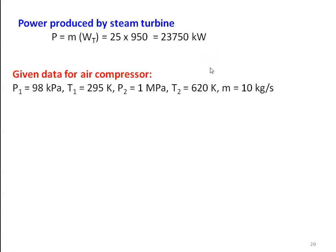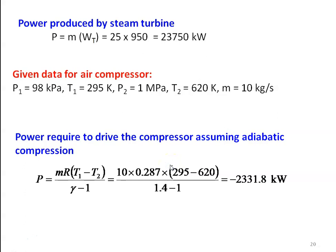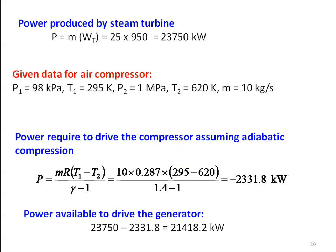For the air compressor: P1 equal to 98 kPa, T1 equal to 295 K, P2 equal to 1 MPa, T2 equal to 620 K, mass flow rate equal to 110 kg/s. Power required to drive the compressor (adiabatic) equal to m times R times (T1 minus T2) divided by (gamma minus 1) equal to 110 times 0.287 times (295 minus 620) divided by 0.4 equal to 2331.8 kW (negative sign indicating work input to compressor). Power available to the generator equal to 23750 minus 2331.8 equal to 21418.2 kW.